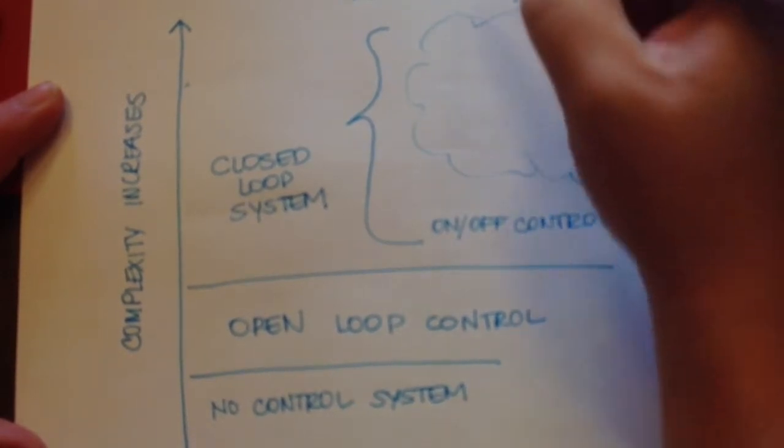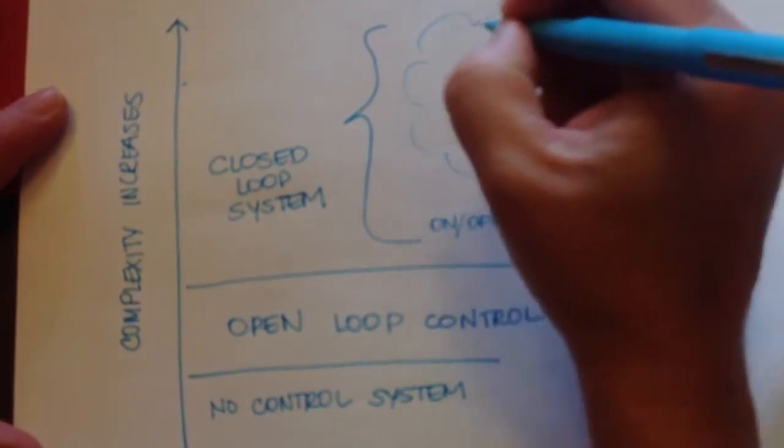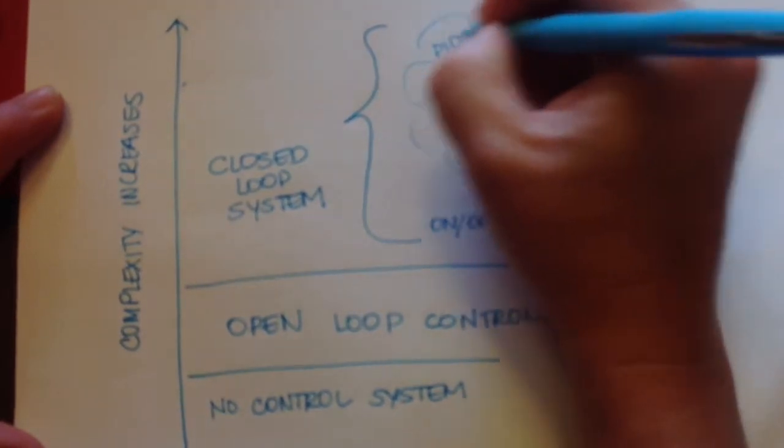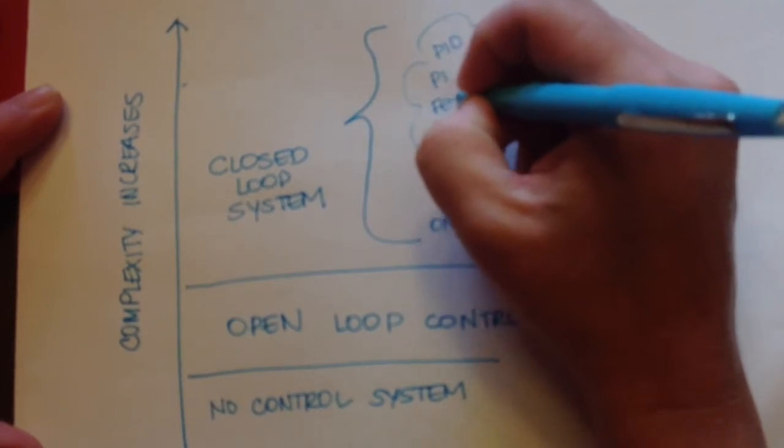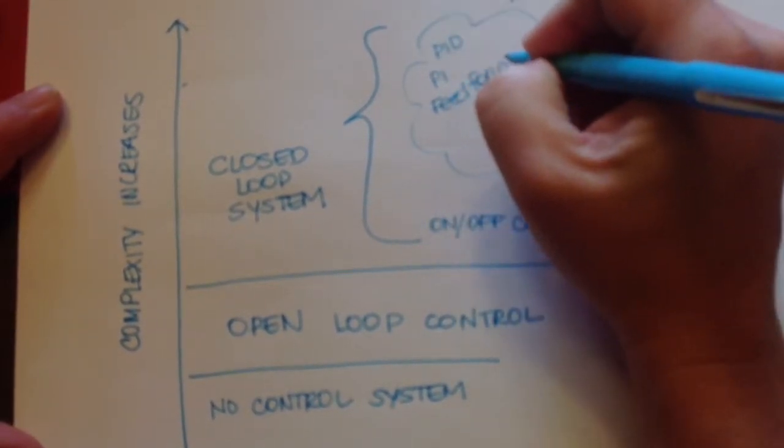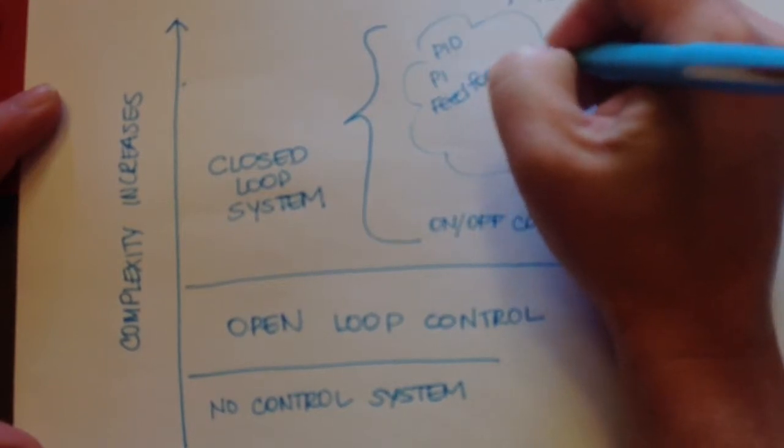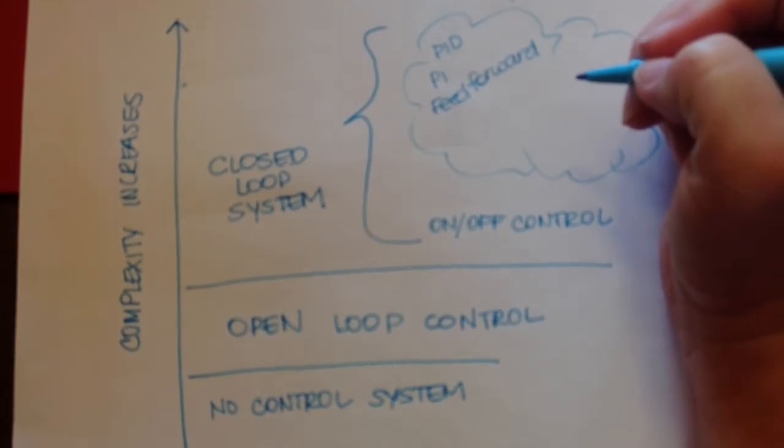But then there are going to be a lot of other ones kind of all jumbled up, and we're not going to try to rank them in levels of complexity necessarily, but we would have PID control, PI, feedforward. Let's see, let's think of some other types we might have. I'm totally drawing a blank this morning.